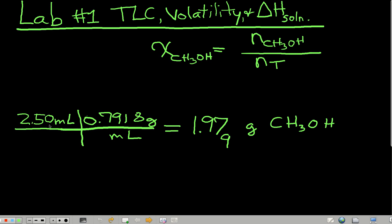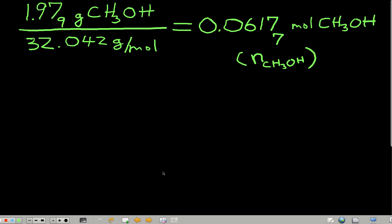You measure out 2.50 milliliters of methanol, multiply that volume times the density, which I gave you, and that gives you the mass of methanol in that solution. Next, take the mass of methanol divided by the molar mass of methanol, and that gives you the moles of methanol.